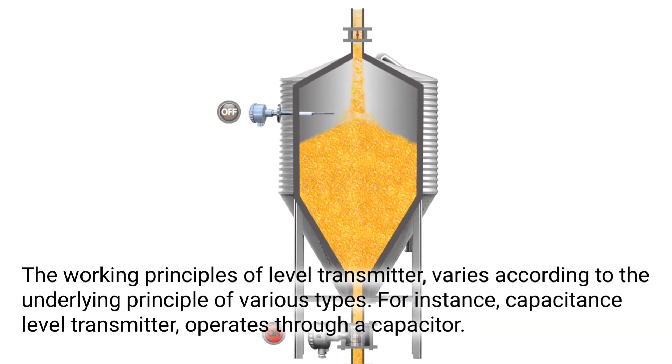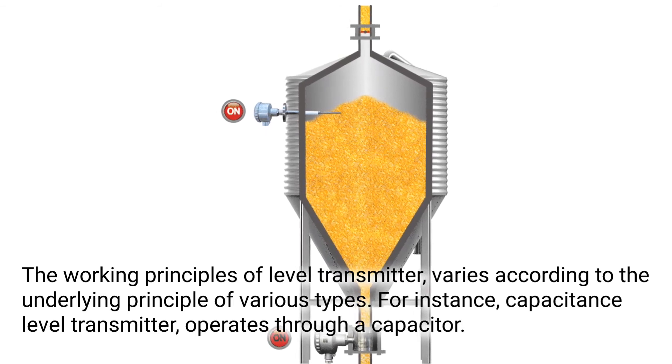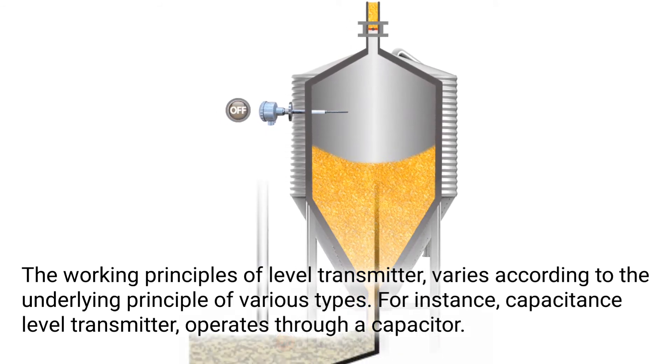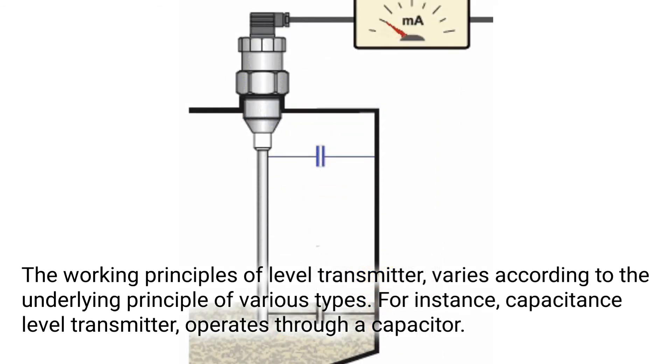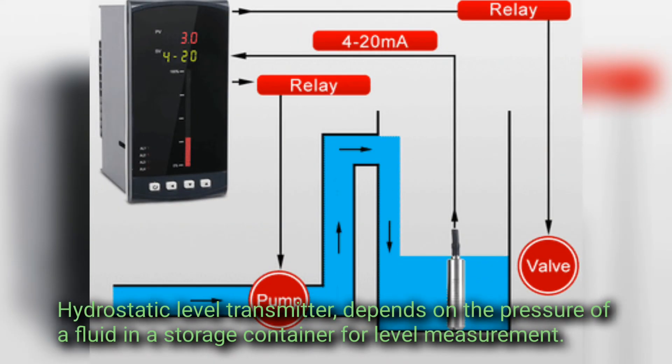The working principle of Level Transmitter varies according to the underlying principle of various types. For instance, Capacitance Level Transmitters operate through a capacitor. Hydrostatic Level Transmitters depend on the pressure of a fluid.